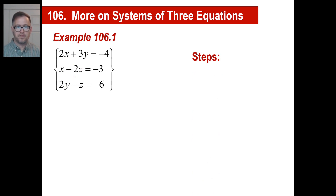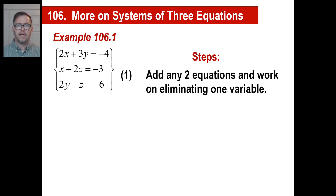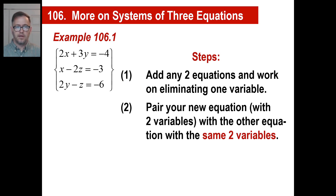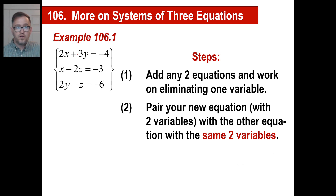There are basically two steps. The first step — and of course you can pause — is to add any two equations and work on eliminating one variable. The second step is to pair your new equation, which will have two variables (x and y, or x and z, or y and z), with the other equation that has the same variables. You can solve two equations with two variables — eliminate, substitute, or whatever.